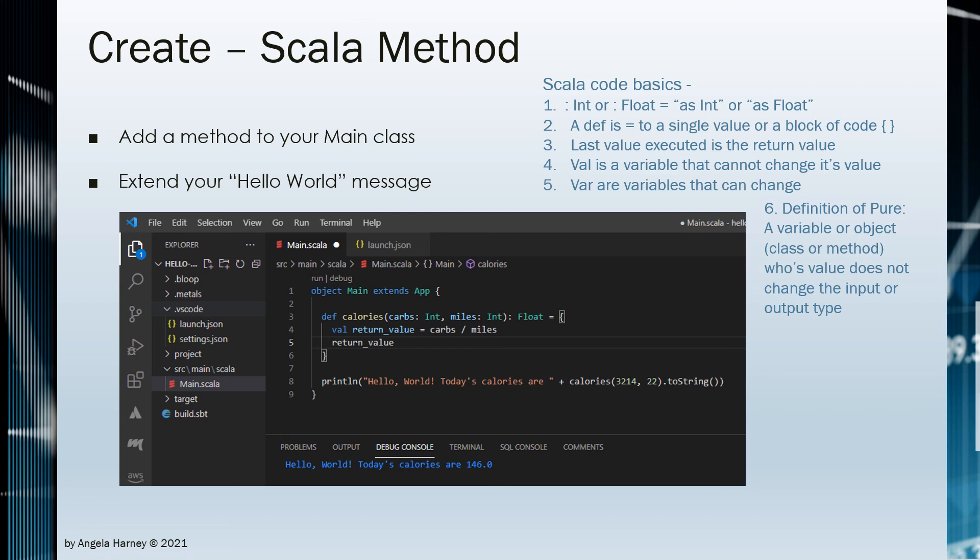Using 'val' rather than 'var' to declare a variable means that the variable will not have its value changed. This allows Scala to optimize the memory for the value — Scala calls this a pure variable. Snowpark counts on Scala to provide pure objects that use only pure variables.